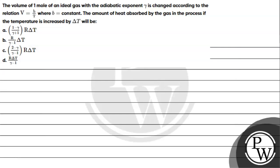Let's read the given question. The volume of 1 mole of an ideal gas with adiabatic exponent gamma is changed according to the relation V equals b divided by T, where b is a constant. The amount of heat absorbed by the gas in the process, if the temperature is increased by delta T, will be: option A: (1 minus gamma)/(gamma plus 1) R delta T; option B: R/(gamma minus 1) delta T; option C: (2 minus gamma)/(gamma minus 1) R delta T; option D: (R minus delta T)/(gamma minus 1).